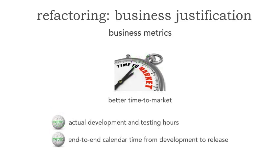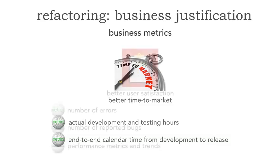Now let's talk about better time to market. I have actual development and testing hours and I know the end-to-end calendar time. Now that we've split our application into, say, four different services or macro services, I can develop four times faster. These are theoretical numbers, of course, but it's better than pulling a number out of the air. Now that I know the actual development and testing hours, I can say that based on the split of functionality we can run these efforts in parallel, therefore increasing time to market.